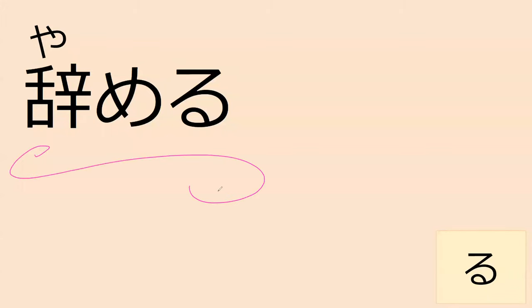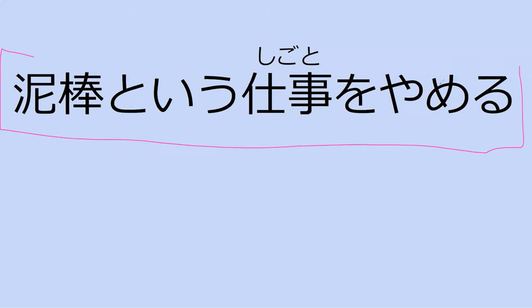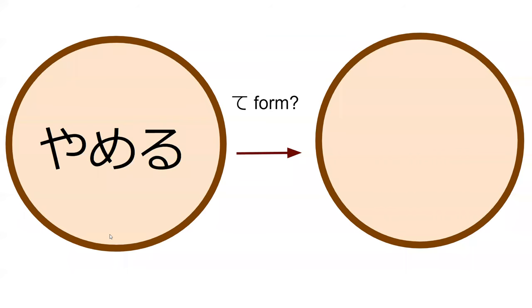Do you know what yameru means? Stop — yes, and it is a ru-verb. Do you know what shigoto means? Work, a job — yes. Can you read the sentence for me? 'Stop such a job as a thief.' Yes — to stop the work that is thieving. Perfect. What's the te-form of yameru? It's a ru-verb, therefore it would be yamete.